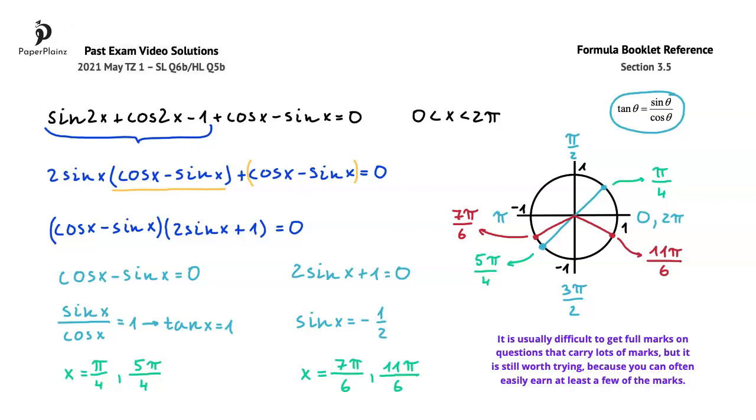Here, for instance, if you manage to factorize and get to either sin x / cos x = 1, or sin x = -1/2, you have already earned three of the six marks.